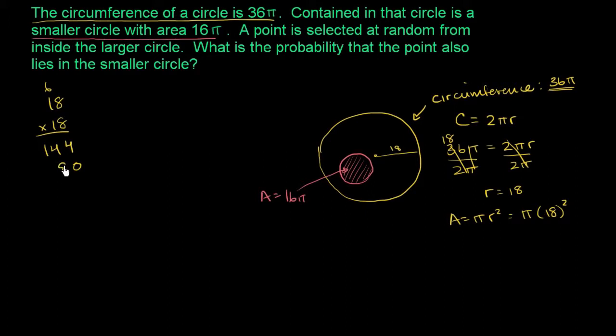And then we put that 0 there because we're now in the tens place. 1 times 8 is 8. 1 times 1 is 1. And really, this is a 10 times a 10. That's why it gives us 100. But anyway, 4 plus 0 is 4, 4 plus 8 is 12. And then 1 plus 1 plus 1 is 3. So it's 324. So the area here is equal to 324 pi.